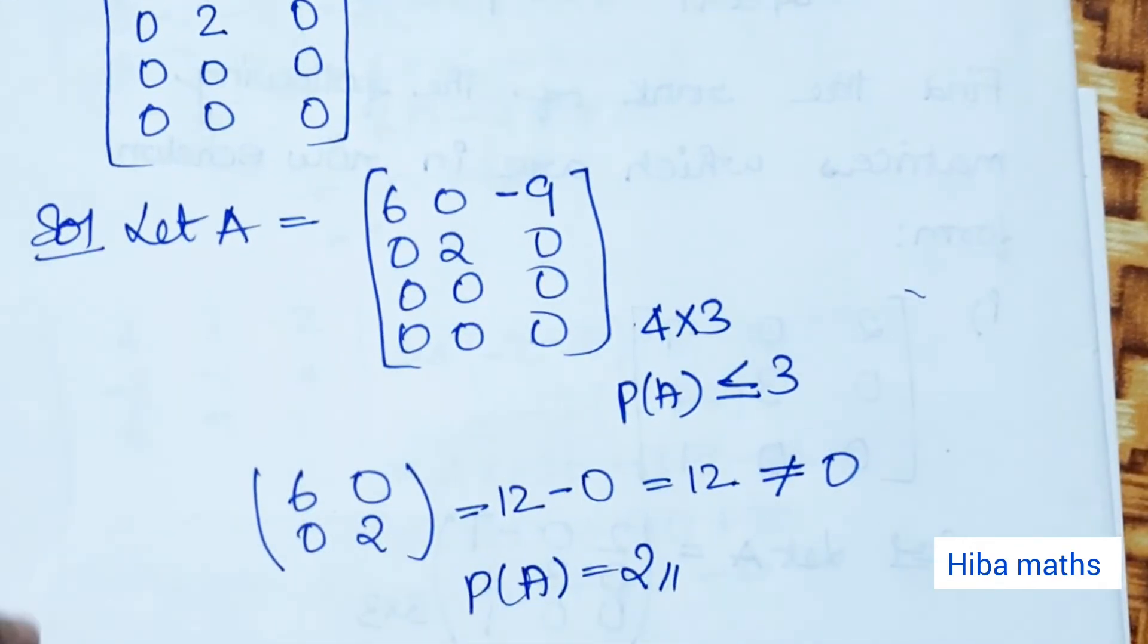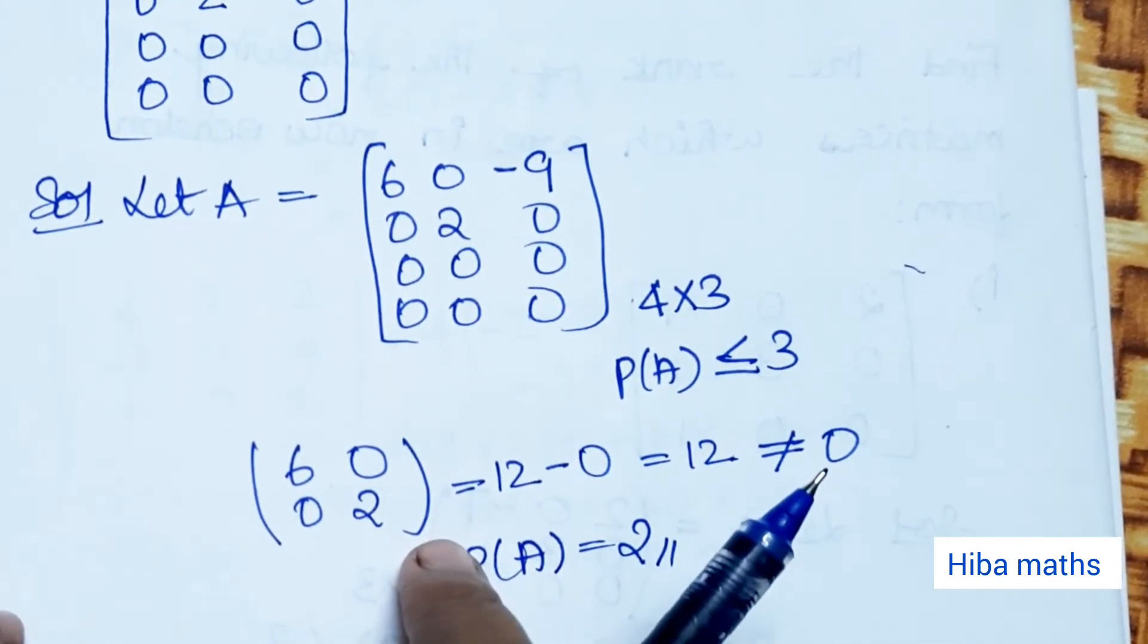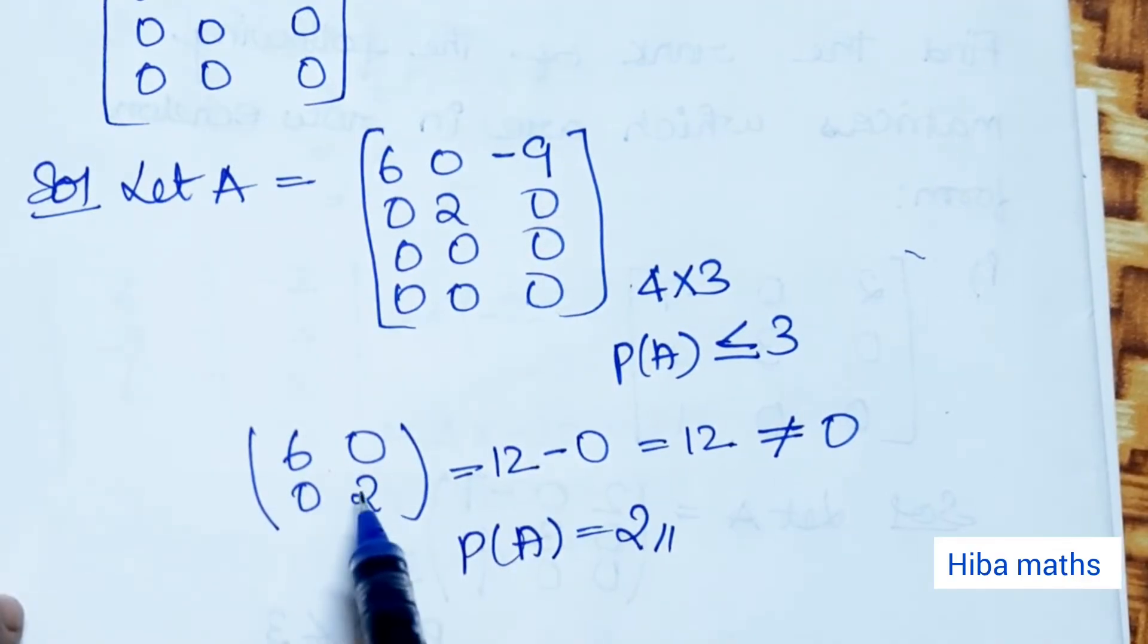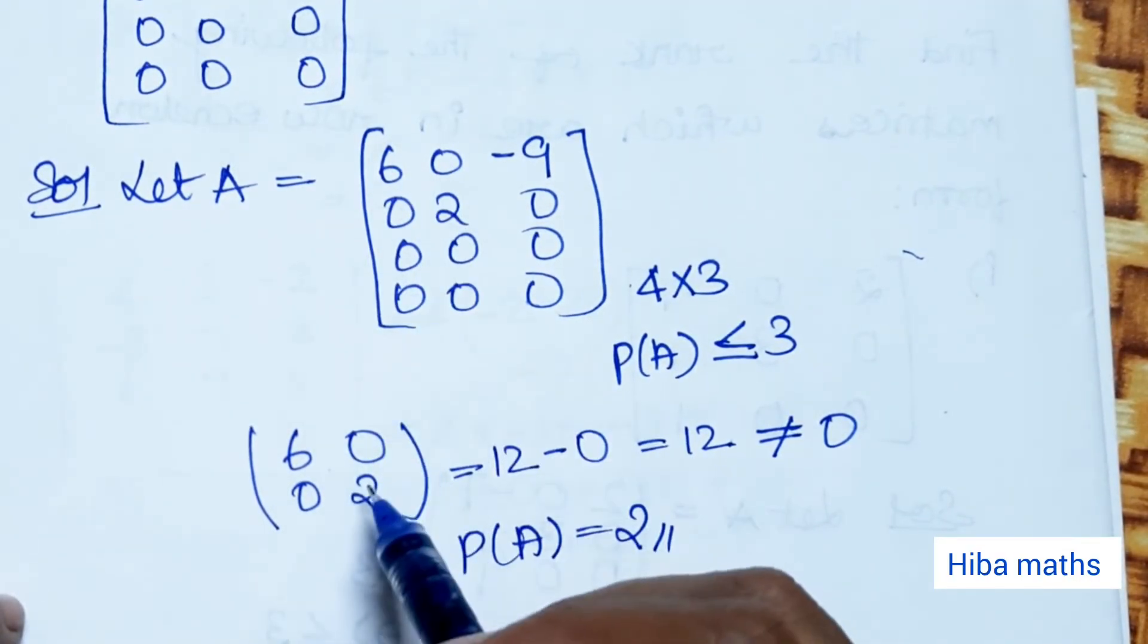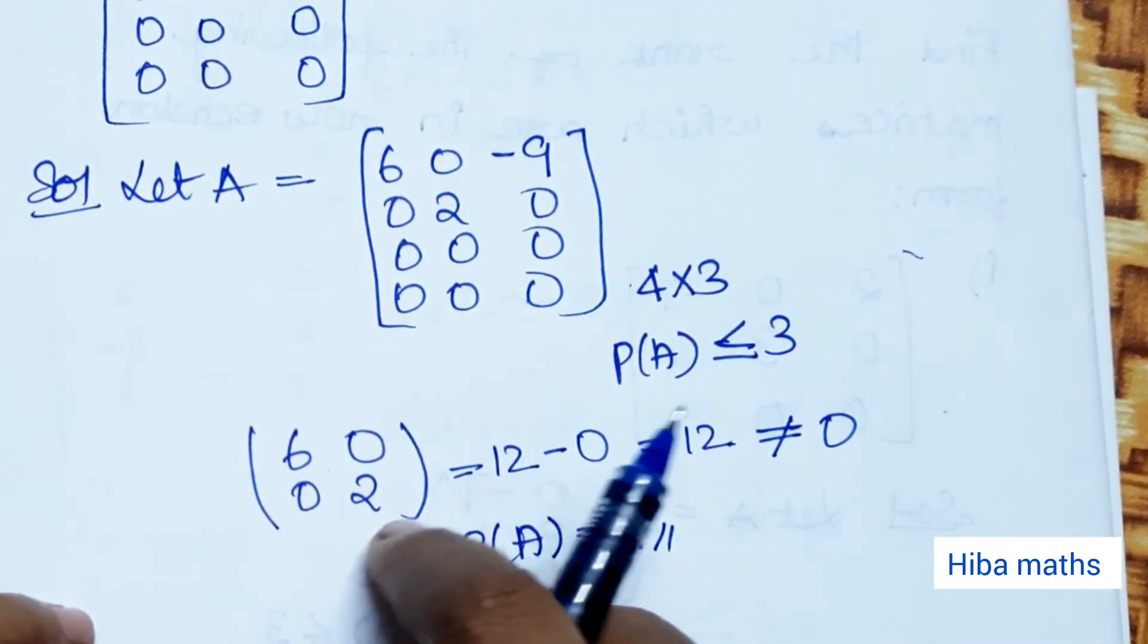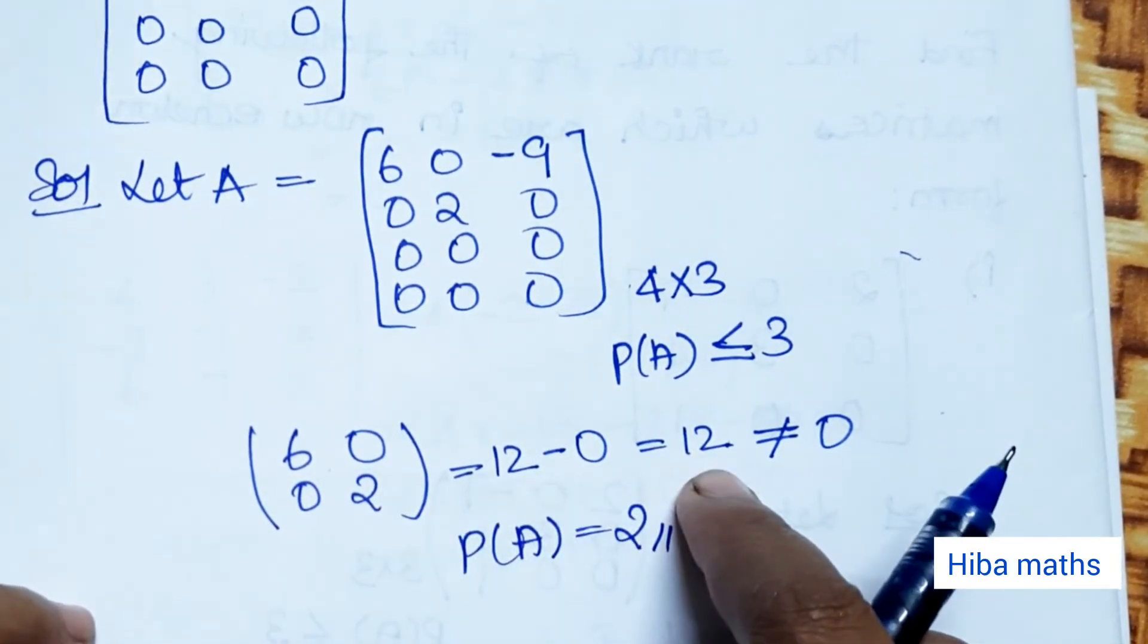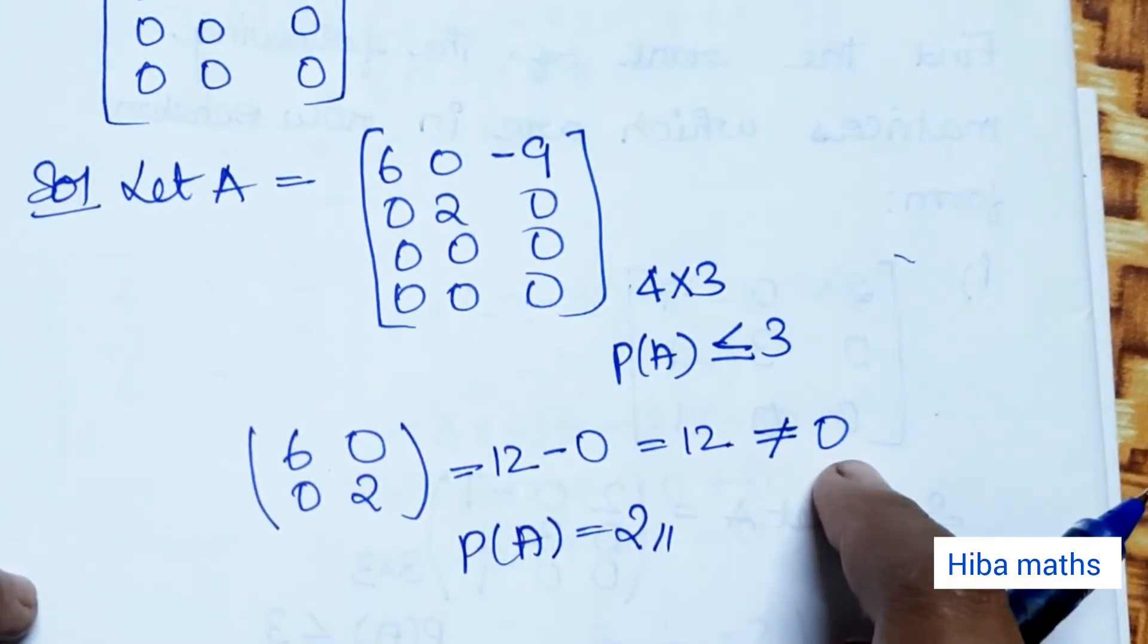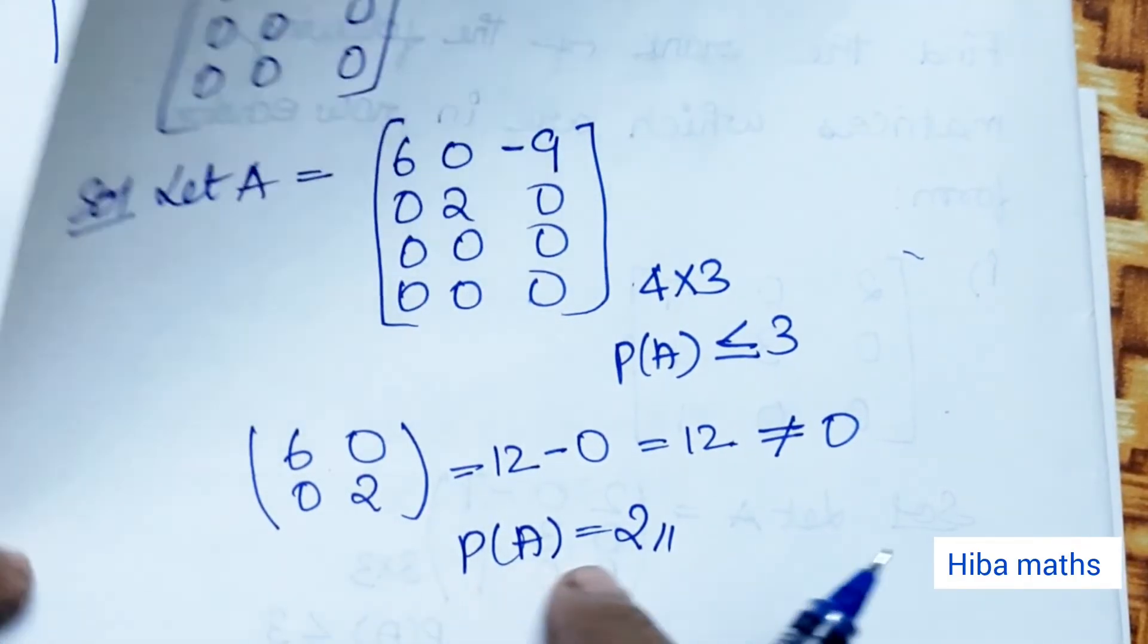Since the 3 by 3 determinant is 0, we check the 2 by 2 submatrix [6,0; 0,2]. The determinant is 6 × 2 = 12, which is not equal to 0. Therefore, the rank of matrix A is 2.